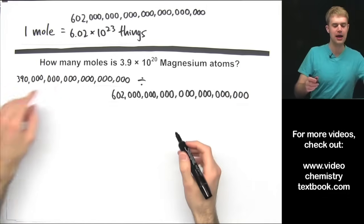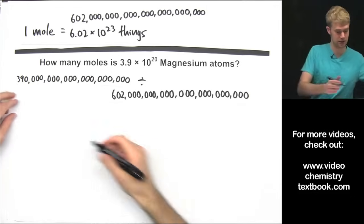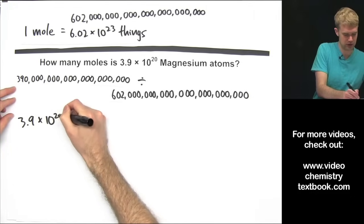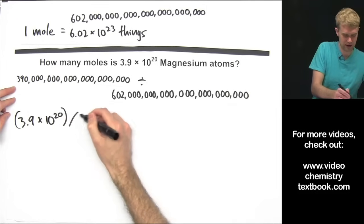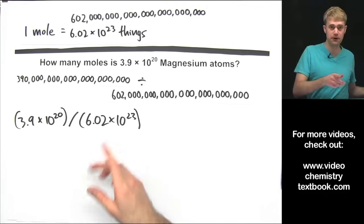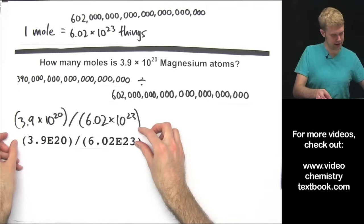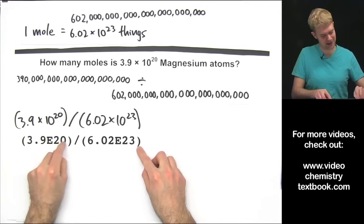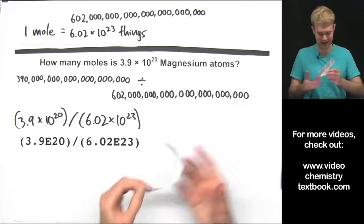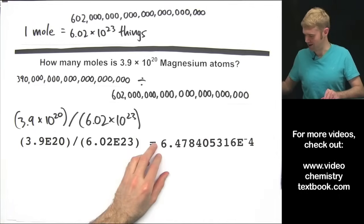This is a good way to think about it. Now let's put these numbers into scientific notation, 3.9 times 10 to the 20th divided by 6.02 times 10 to the 23rd. Put that into the calculator like this, 3.9 e20 divided by 6.02 e23, we're going to get this as our final answer.